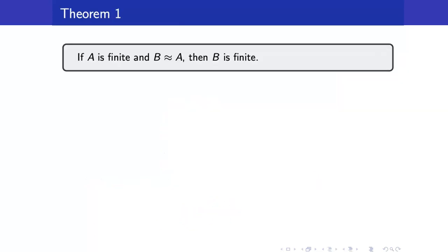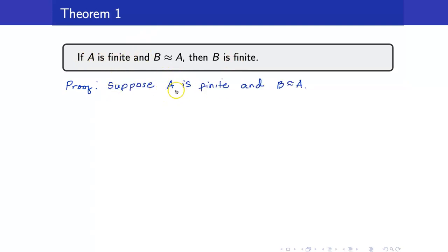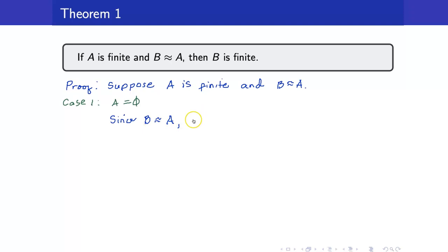Here is our first theorem regarding finite sets. First, if A is finite and a set B is equivalent to A, then B must also be finite. We start with our hypothesis. Always remember that if A is finite, there are always two cases: it is either empty or it is equivalent to N sub k. So we have to do proof by cases. For case one, A is empty. In this case, we want to show that B must also be the empty set. Since B is equivalent to A, which we know to be empty, there exists a bijection f from A to B.